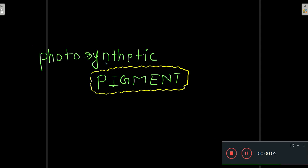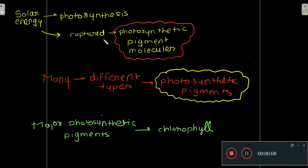Let's talk about photosynthetic pigments. Photosynthesis is a process that converts solar energy into chemical energy, and that chemical energy is utilized to produce carbohydrates. The solar energy required for photosynthesis is captured by photosynthetic pigment molecules. There are many different types of photosynthetic pigments, and the major one is chlorophyll.